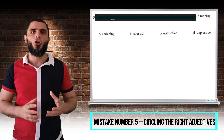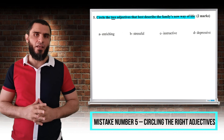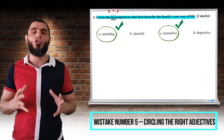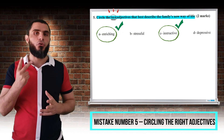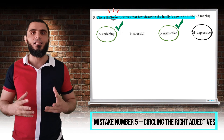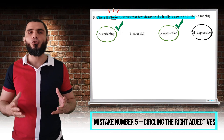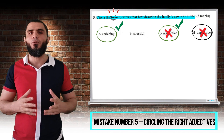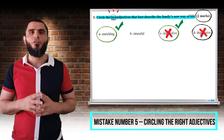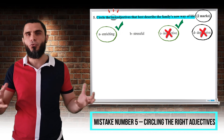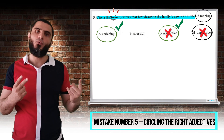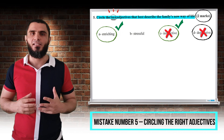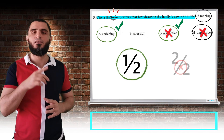Mistake number five: the adjective question. The question is: circle two adjectives that best describe the family's new way of life. It is clear that 'two' is underlined, so you are supposed to circle two adjectives and not three. Unfortunately, some students circle three instead of two to guarantee at least one or two correct answers. If you do so, the incorrect answer will take off a correct item. For example, if the question is worth two marks and you circle two correct and one incorrect, the incorrect answer results in the deduction of one mark — so instead of getting two out of two, you get one out of two.